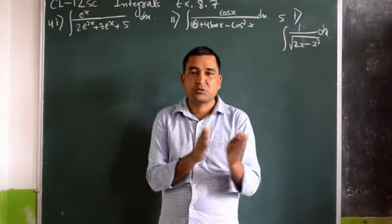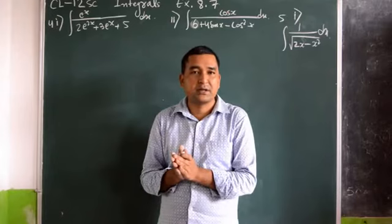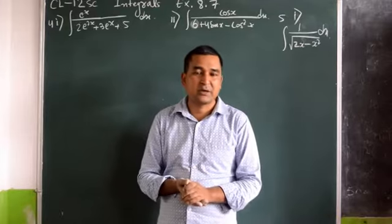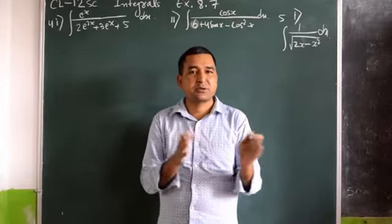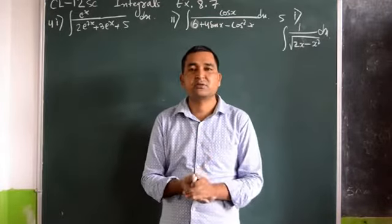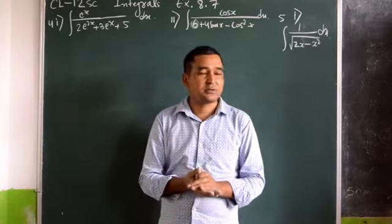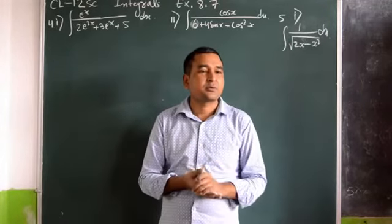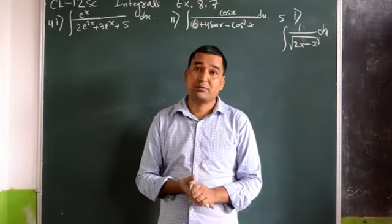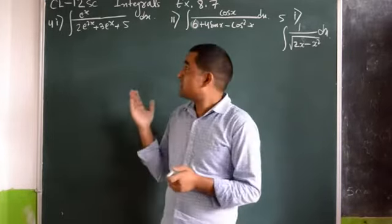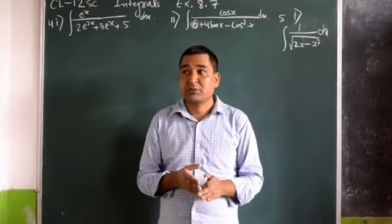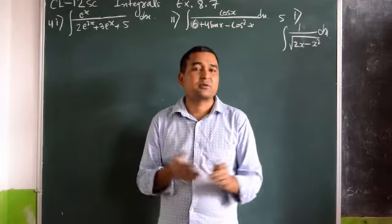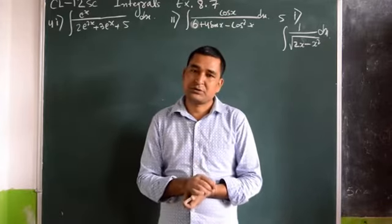Substitution means there are two parts — one is the main expression and another is the derivative part under the process of differentiation. If the substitution is possible, then we can substitute directly. Sometimes the substitution is not possible directly; sometimes we need to simplify, separate, or adjust the numerator or denominator. If there is a quadratic form, always try to convert it into the complete square formula, because there is a formula for these kinds of equations.